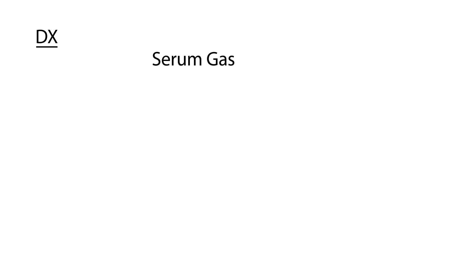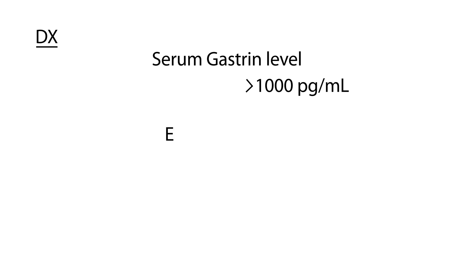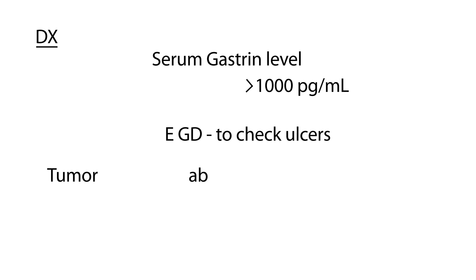How would you go about diagnosing this? The best test is a serum gastrin level, which will often be very high — greater than 1000 — whereas most people hover around 150. A test you can do to check for ulcers is an EGD, which looks directly into the stomach and duodenum to see if there are any ulcers. Because we're talking about a tumor, you also need an imaging test to localize it, such as an abdominal CT, which will help identify the tumor in the pancreas.